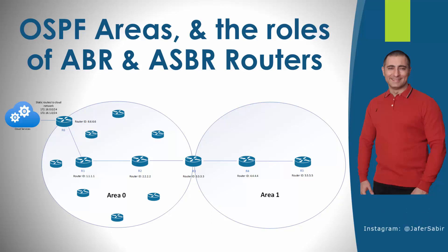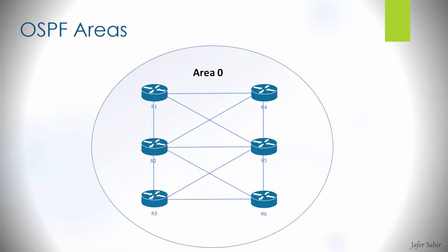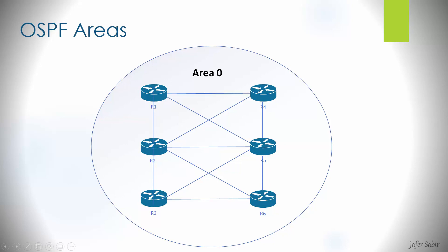OSPF is a link state routing protocol that sends triggered and periodic updates about the network, using the shortest path first algorithm to build and calculate the shortest path to all known destinations — the IP subnets behind all routers in an OSPF area. Routers send updates when a change occurs, and also send a link refresh update of the entire routing table once every 30 minutes, even if no changes have occurred, to ensure all routers remain in sync.